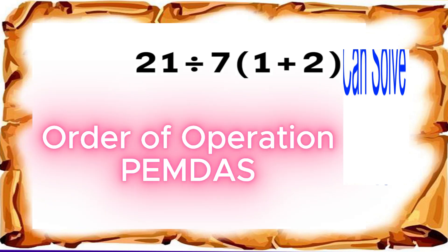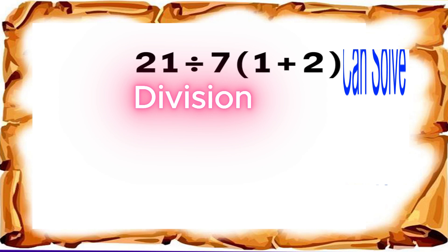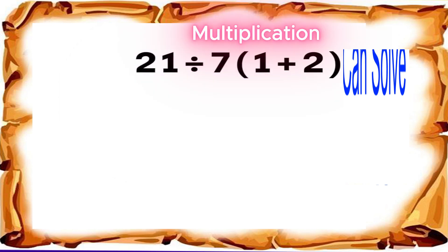To solve this expression correctly, we follow the order of operations: parentheses come first, then exponents, then multiplication and division from left to right, and finally addition and subtraction from left to right. In this expression, we have one division, one multiplication, and one set of parentheses.